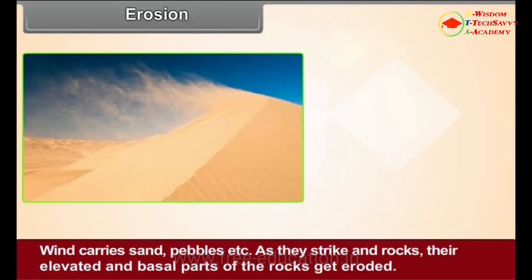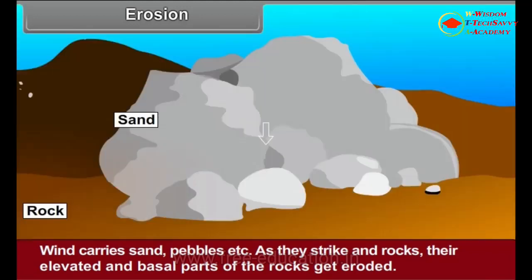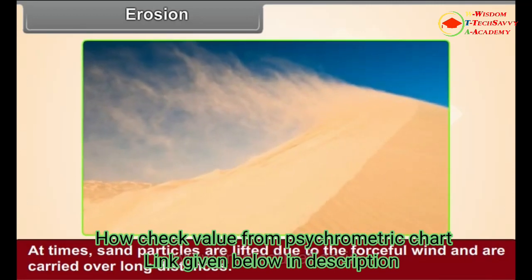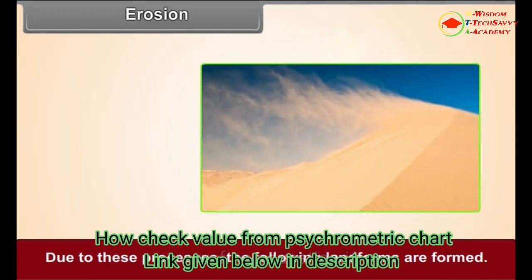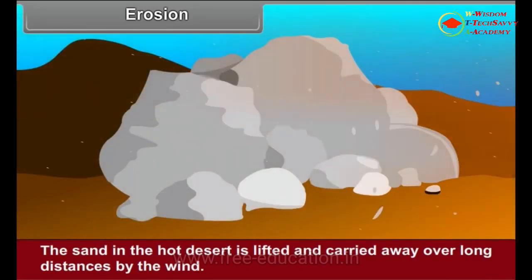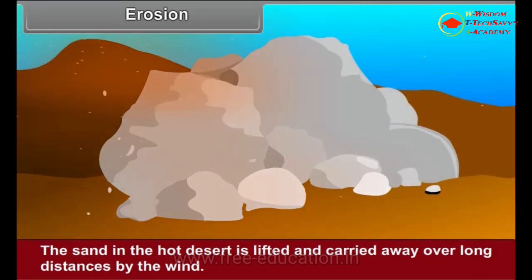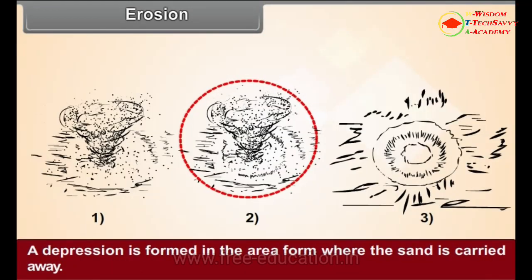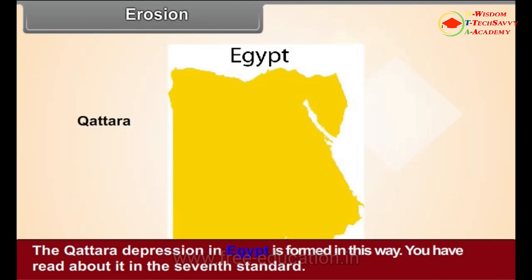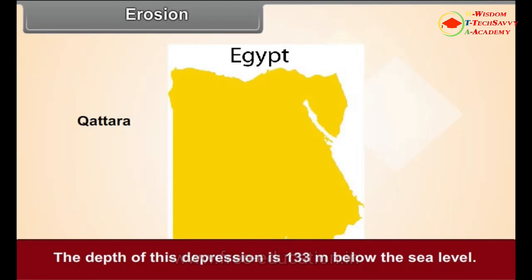Erosion by Wind: Wind carries sand, pebbles, etc. As they strike and scratch the rocks, the elevated and basal parts of the rocks get eroded. At times, sand particles are lifted due to forceful winds and are carried over long distances. Deflation Hollows: The sand in hot deserts is lifted and carried away over long distances by the wind. A depression is formed in the area from where the sand is carried away. Such depressions are called deflation hollows. The Qattara depression in Egypt is formed in this way — its depth is 133 meters below sea level.